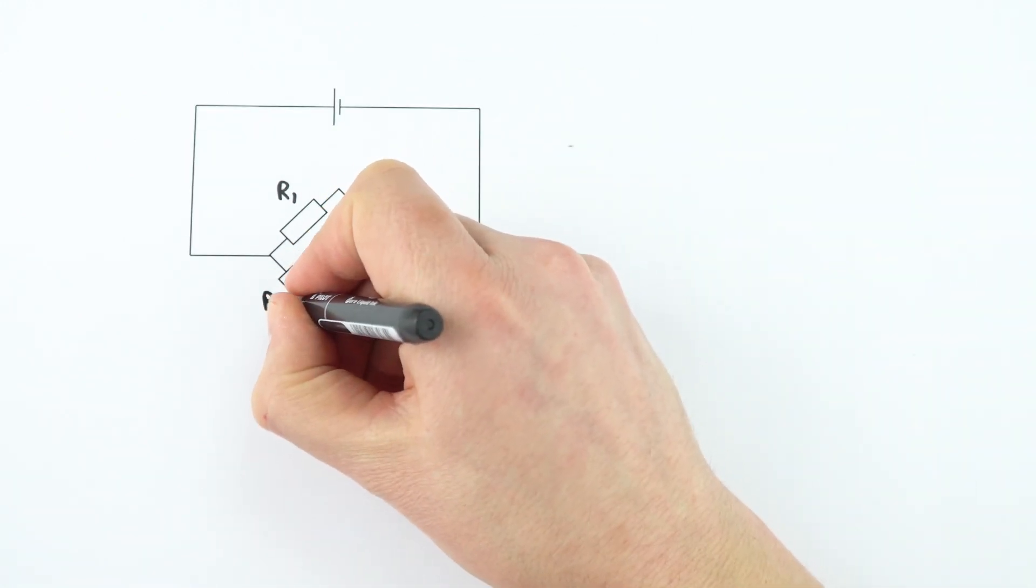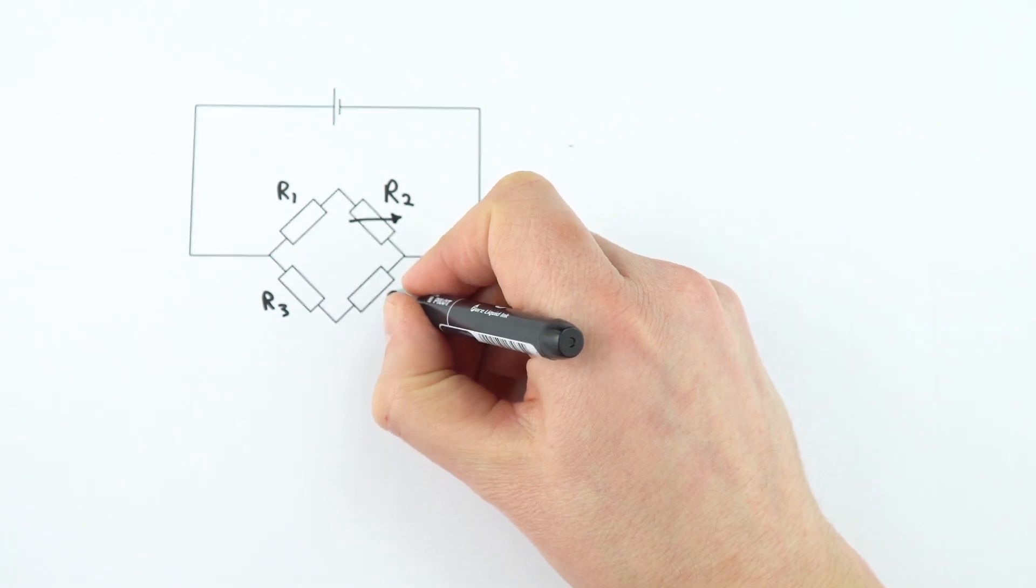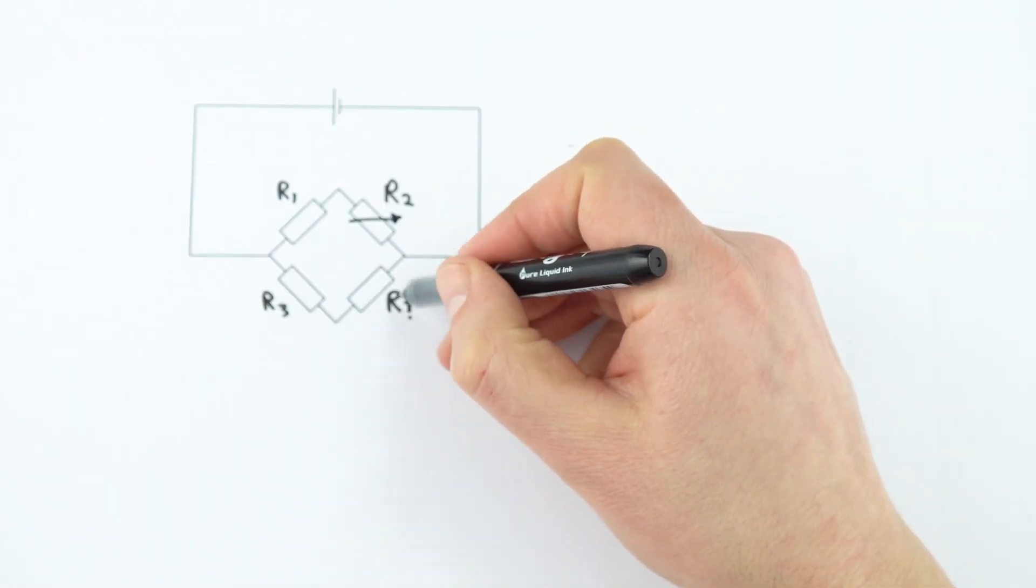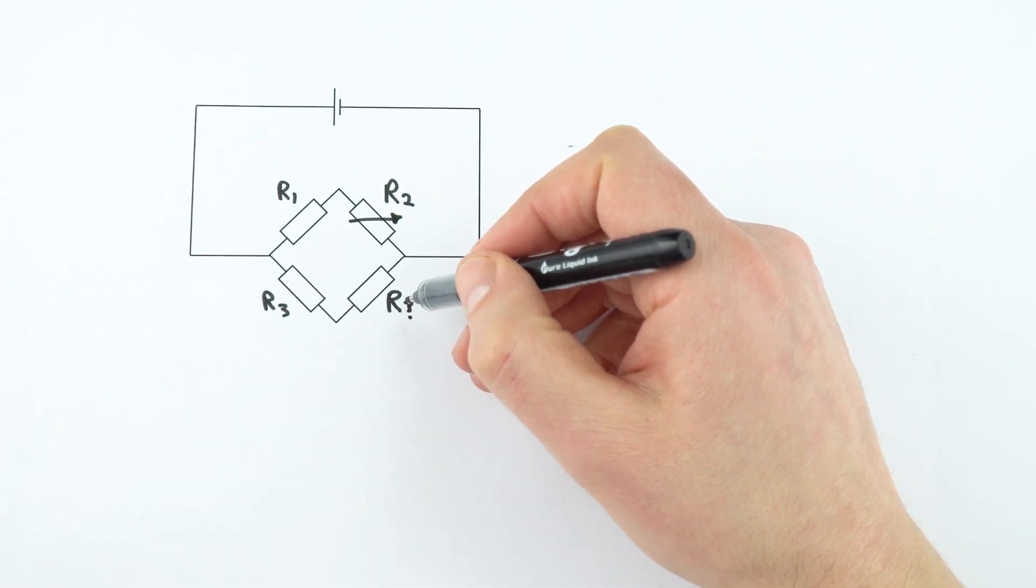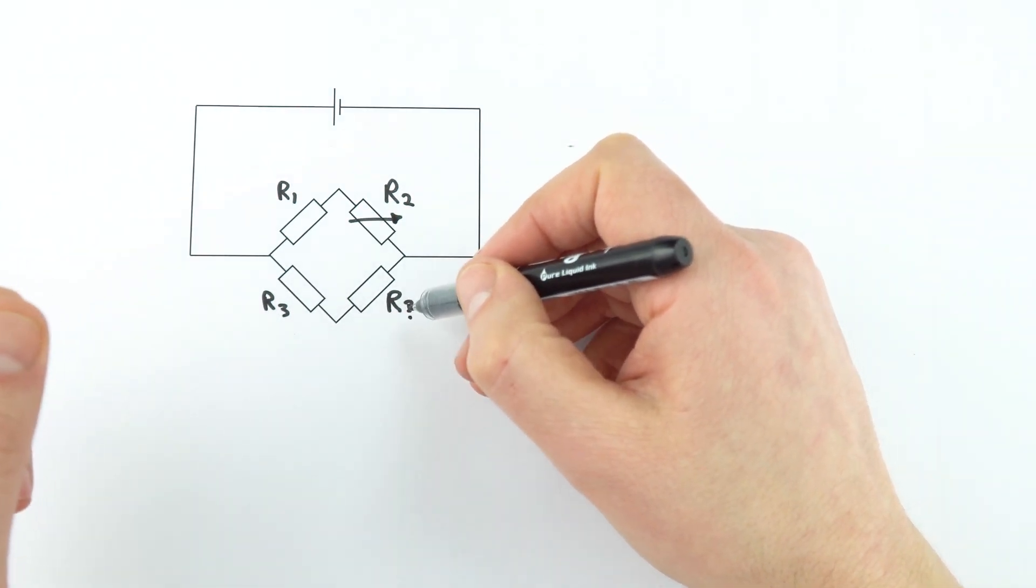We then have resistor 3 over here, and this resistor here is going to be our unknown quantity, so R with a little question mark there. This is the unknown mystery resistor that we want to find the resistance of.